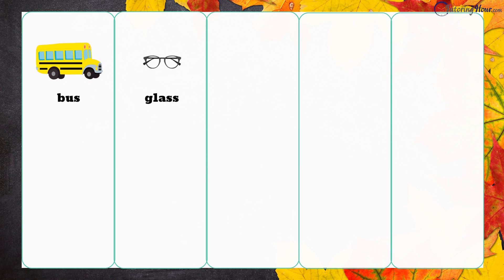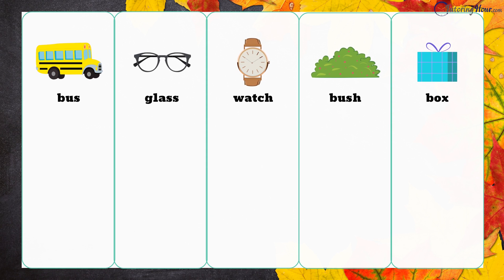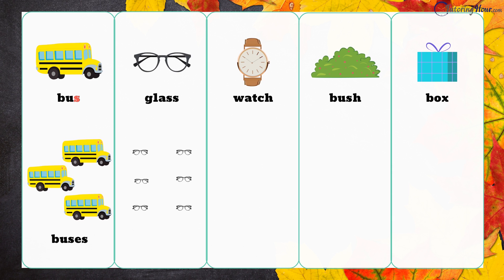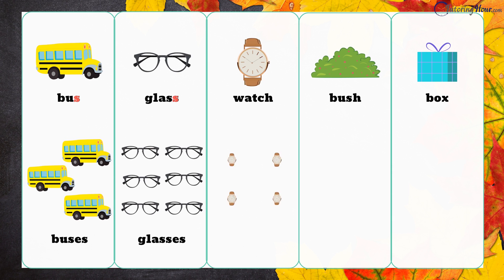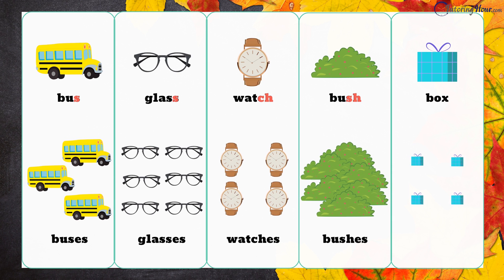Let's repeat the spell and make plurals of bus, glass, watch, bush, and box. And there we have buses, glasses, watches, bushes, and boxes.